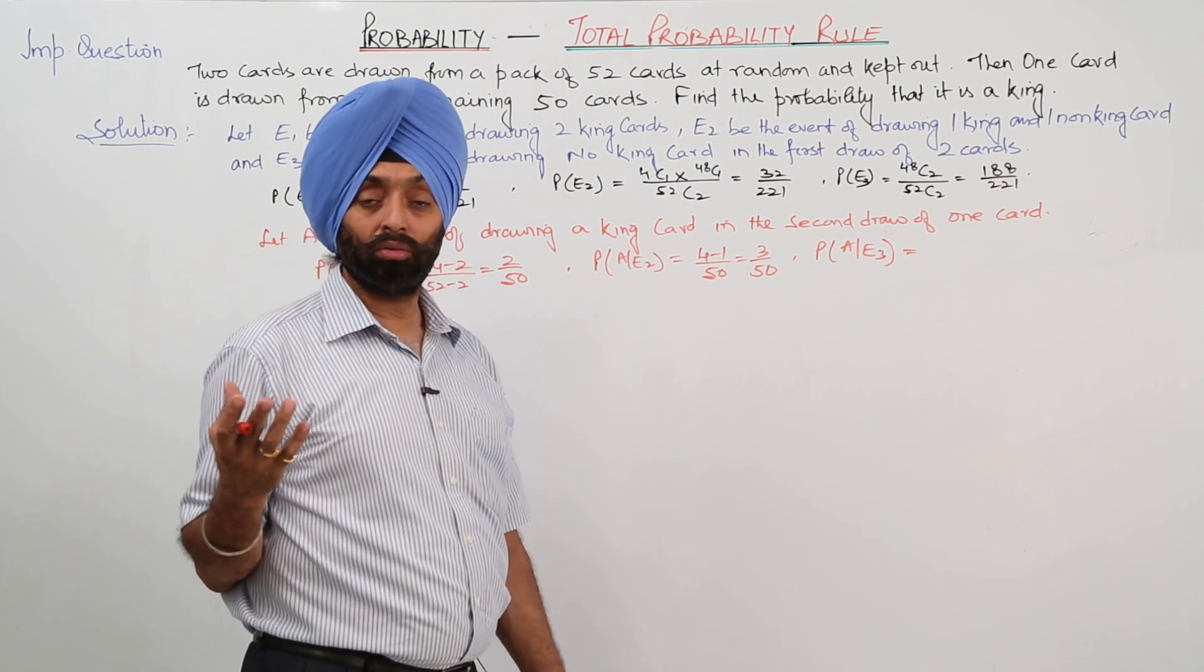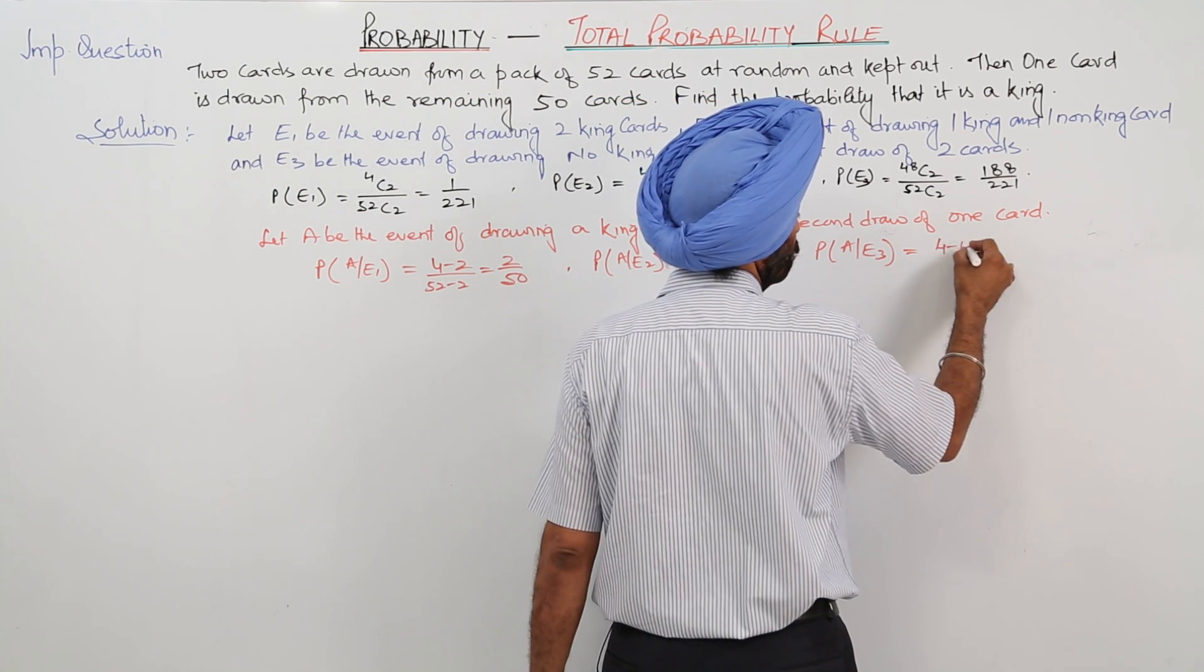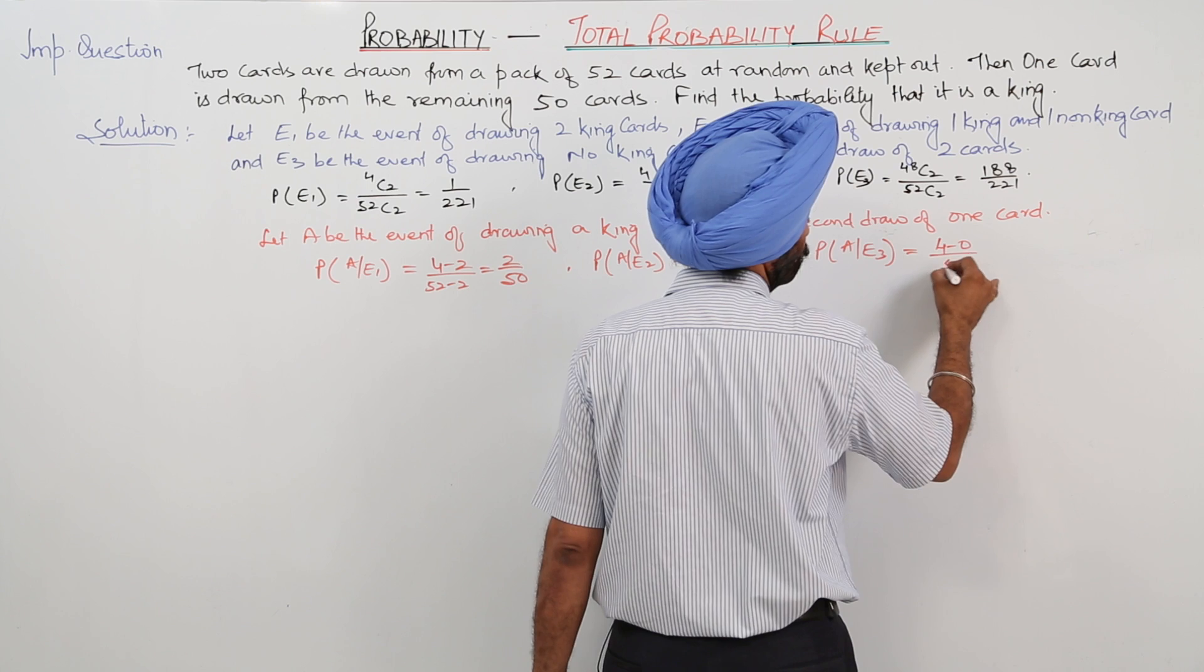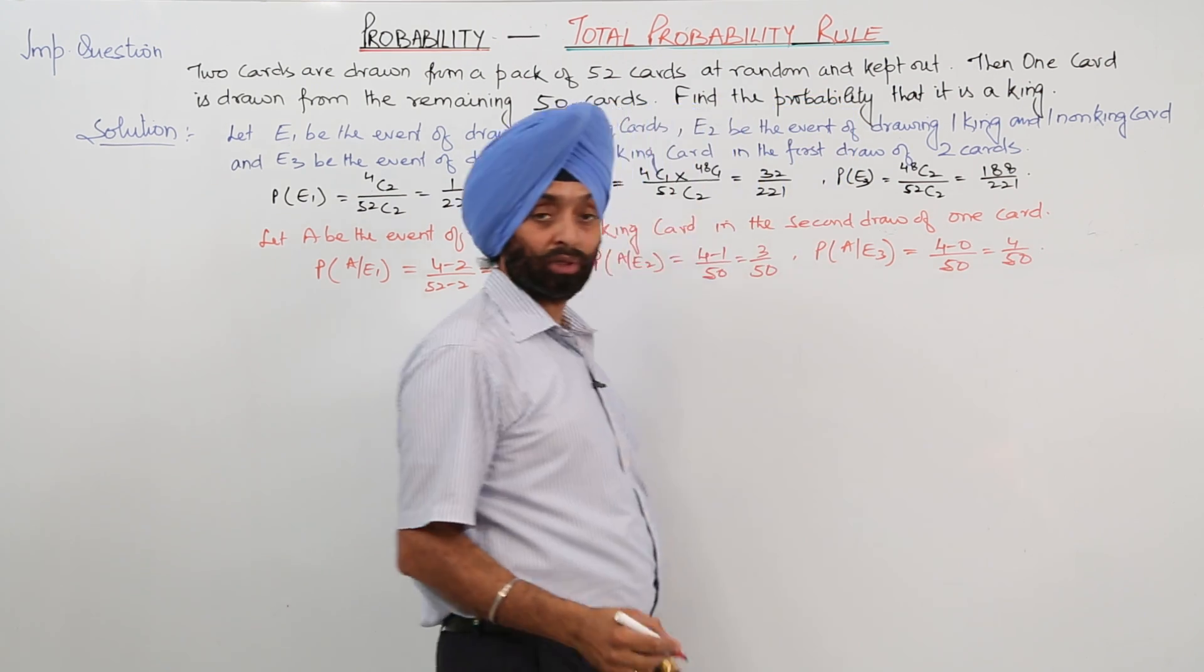And probability for the third event, that is there were no king cards. So total king cards are 4. Now 4 minus 0 upon 50, that is 4 upon 50.